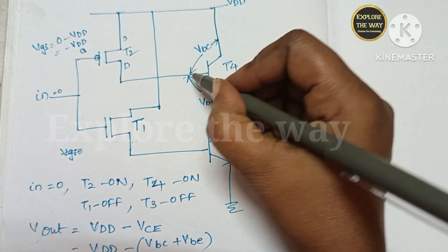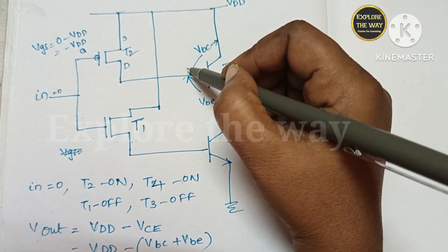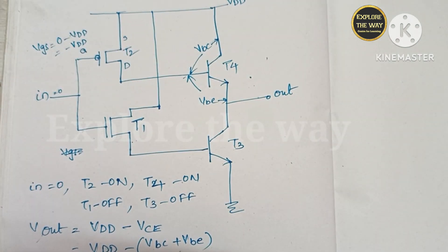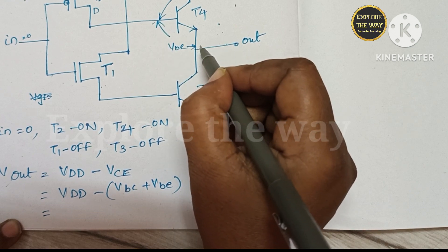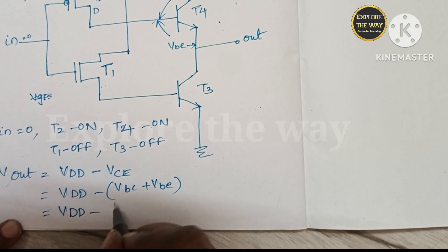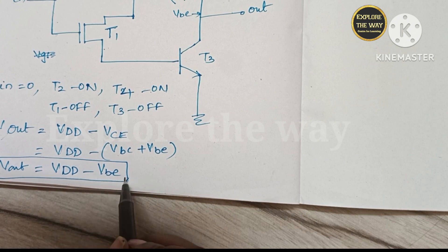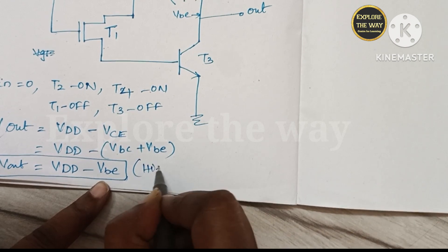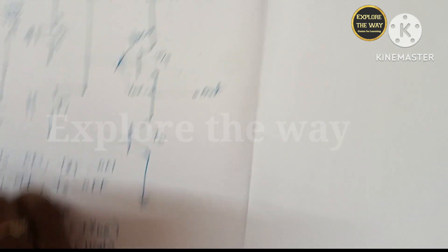Here base is at VDD and collector is also at VDD. So the difference here VBC is equal to 0. And VBE, VBE for a bipolar junction transistor is 0.7 volts. So here the output voltage is VDD minus 1 VBE. Here Vout is equal to VDD minus VBE when the input is 0. Logically, which is treated as high. For the given input 0, output is high.